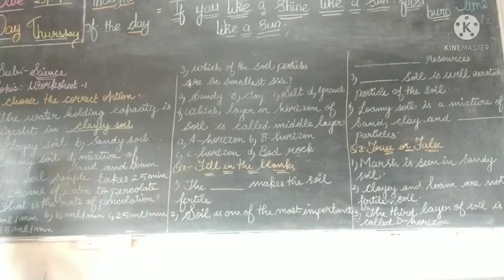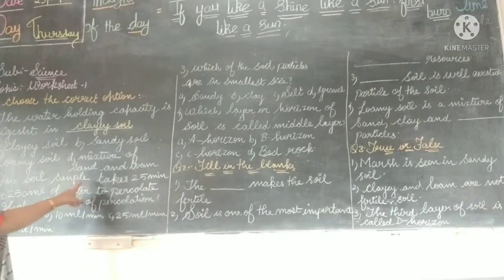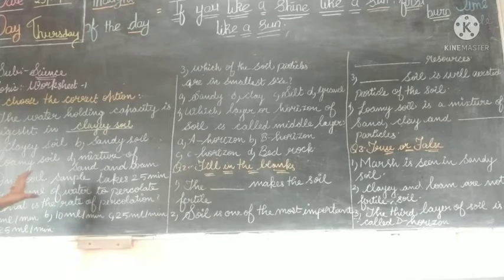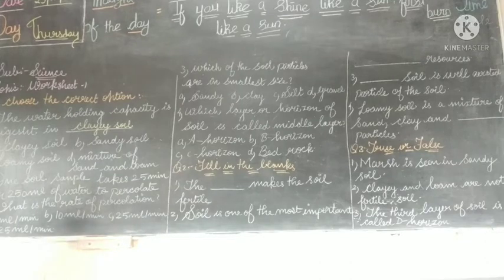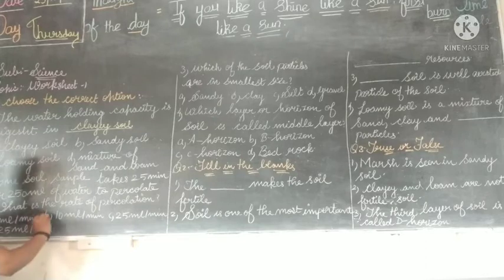The second question: one soil sample takes 25 minutes for 250 ml of water to percolate. What is the rate of percolation? There is a formula for percolation rate — total amount of water divided by time. So the answer is 10 ml per minute.